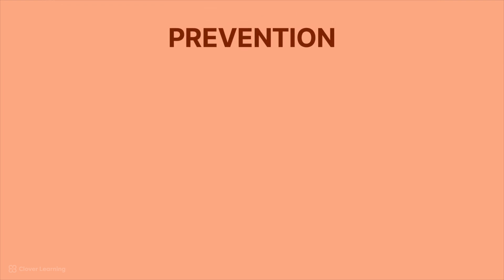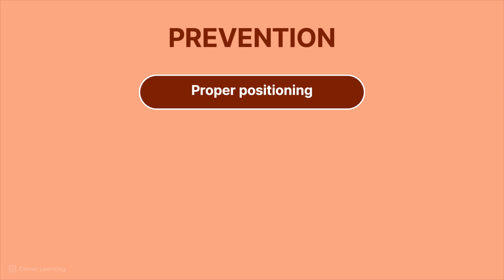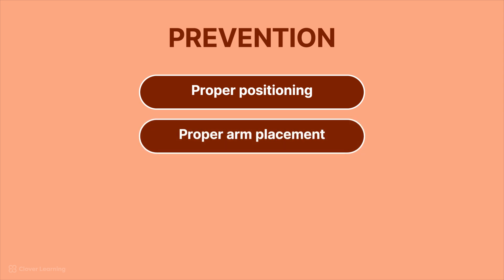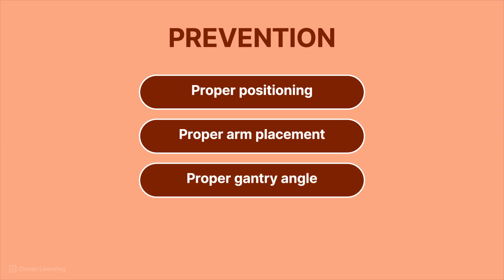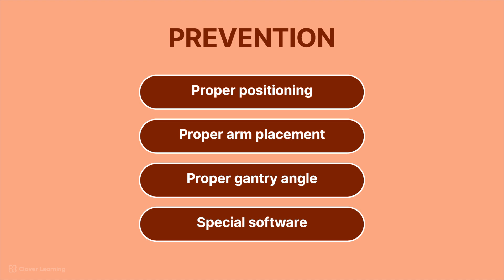So how do you prevent beam hardening artifact? You can't remove a patient's dental implants, but there are a few things you can do. First, remember proper positioning — for example, proper arm placement. When scanning the chest or abdomen, arms should be above the head; when scanning the neck or head, arms should be down. We want dense materials out of the X-ray beam. Also, use proper gantry angulation to angle dense materials outside the beam when possible, particularly when imaging the head and face. Finally, special software from several vendors is commercially available to help reduce beam hardening artifact when other options are not available.